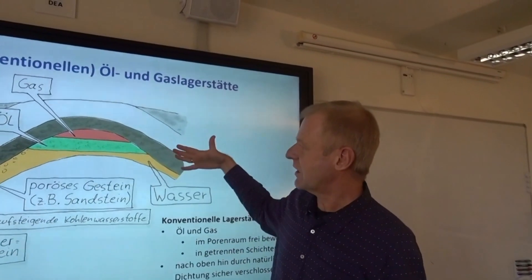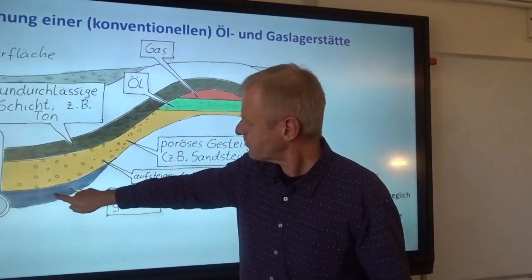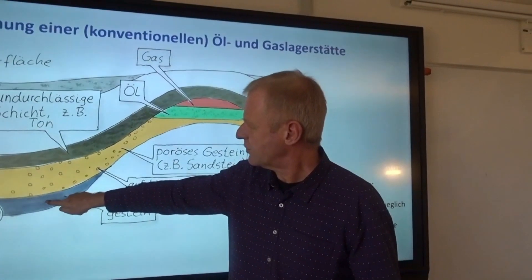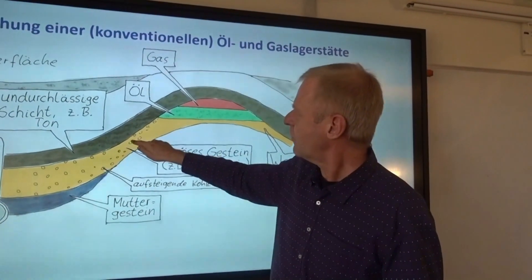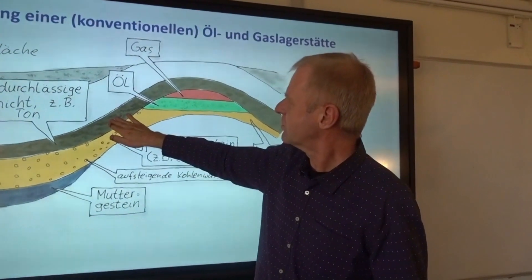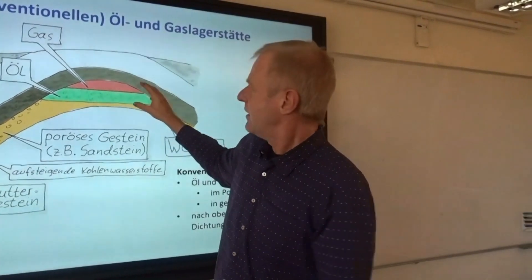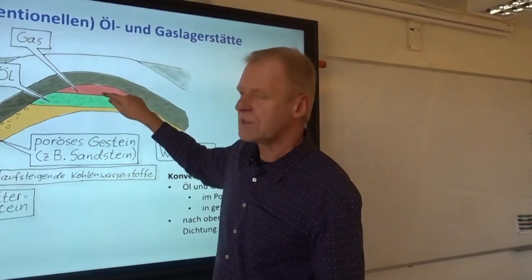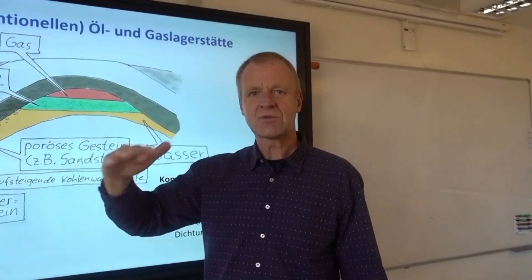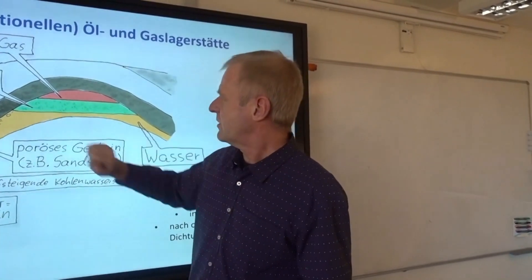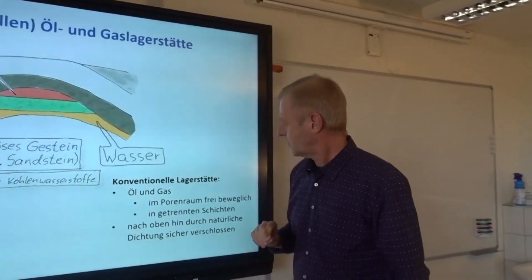A conventional deposit is characterized by the fact that we have a source rock where the hydrocarbons are formed. The hydrocarbons then have to rise through porous permeable rock and come up against an impermeable layer, and this layer has to be shaped like a cap. Then the gas and the oil can accumulate underneath it, and they can be separated by density — the gas on top and the oil underneath — and the pore space in the rock underneath is filled with water.